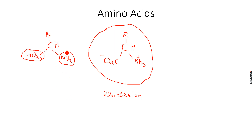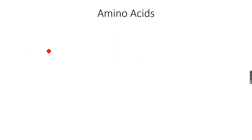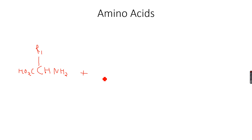When amino acids bond together they form dipeptides. Another reason why these groups are so important is that they can bond with each other. For example, I have an amino acid with side chain R1, an H atom, an NH₂ group, and the HO₂C carboxylic acid group. We also have another amino acid with side chain R2. I have written R1 and R2 to show that the side chains can be different — different amino acids with different side chains can react as well.